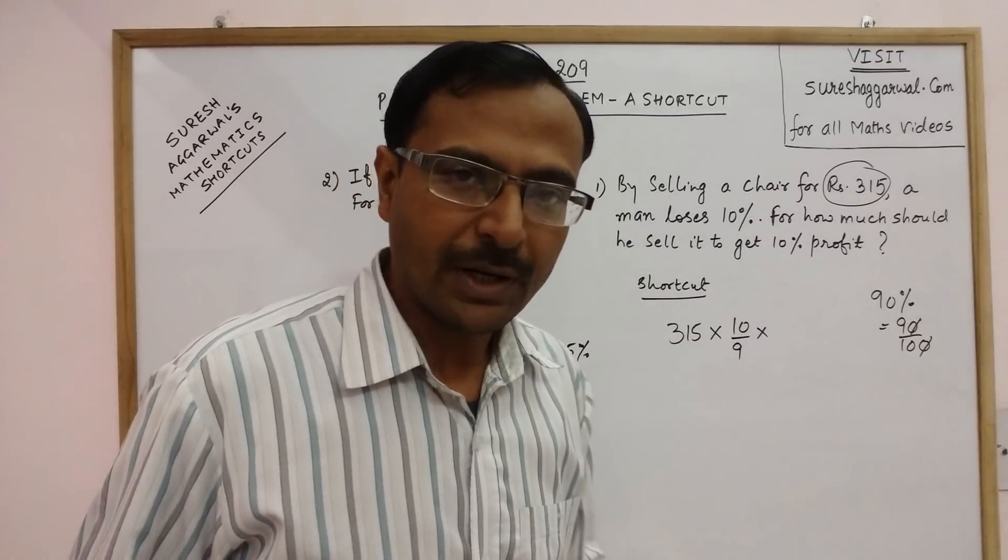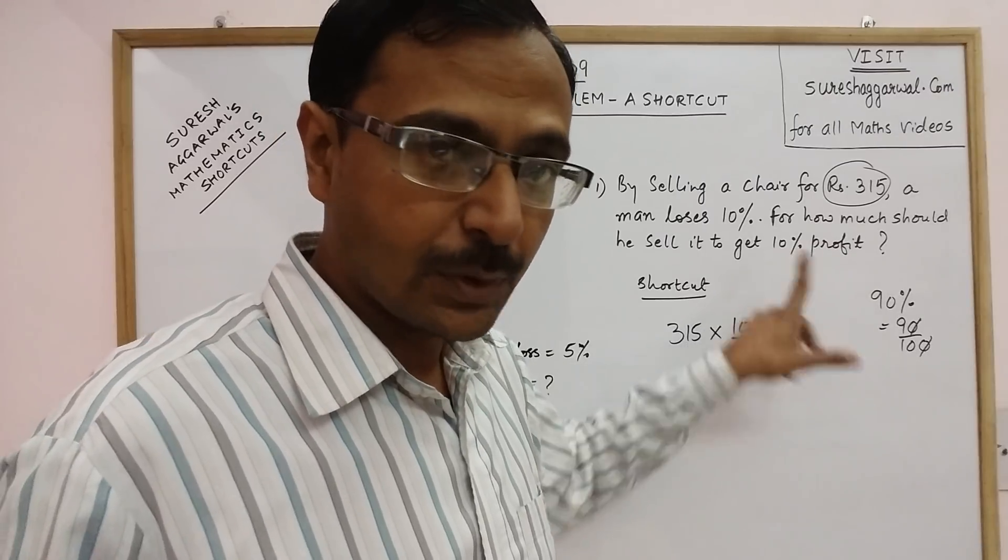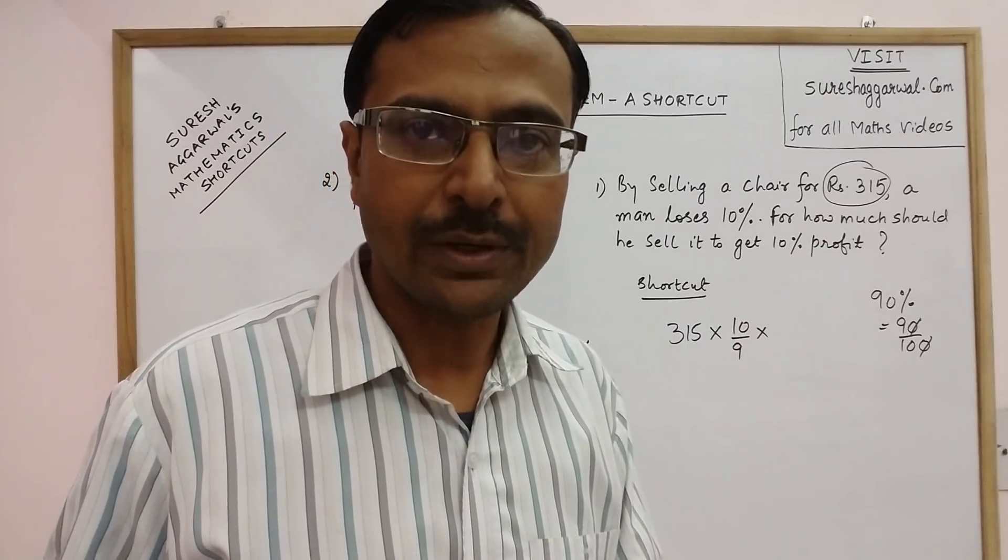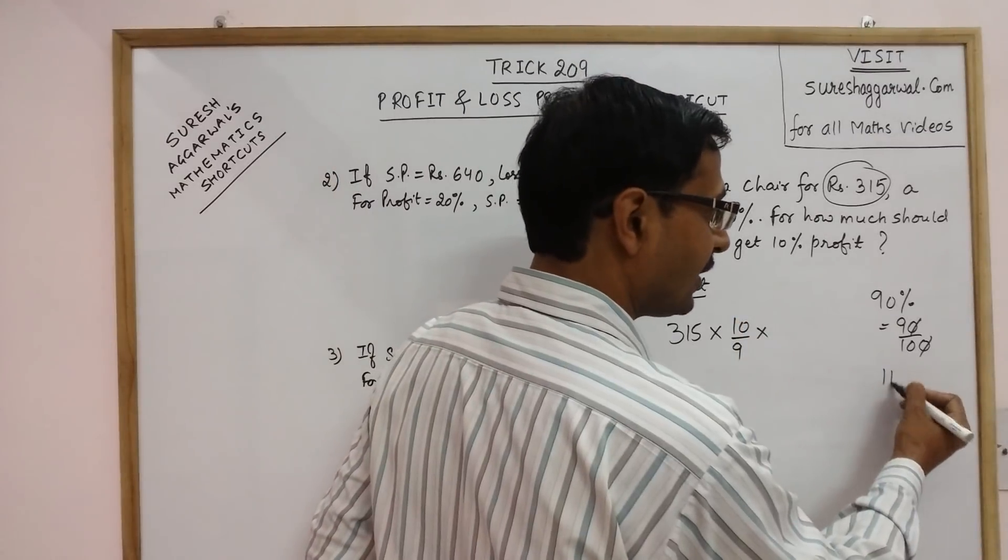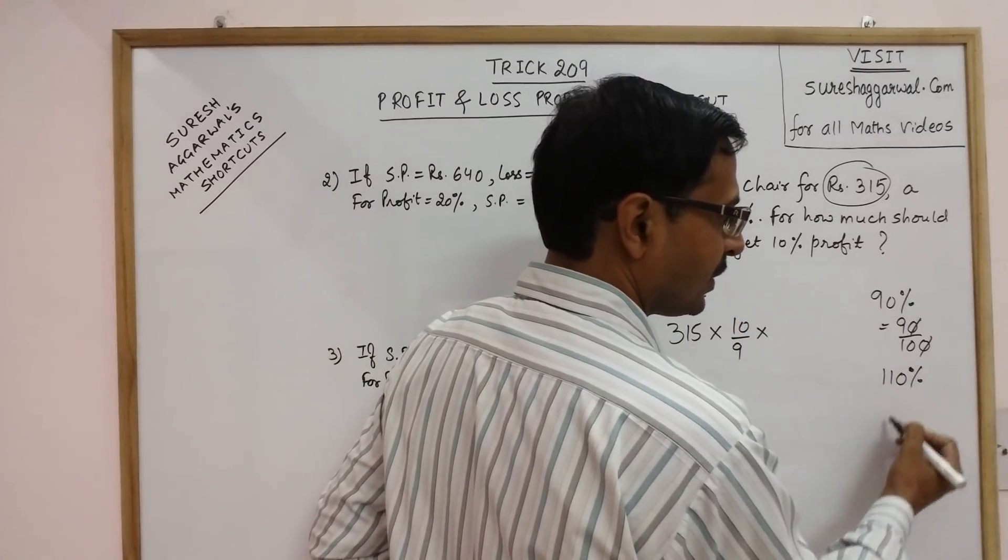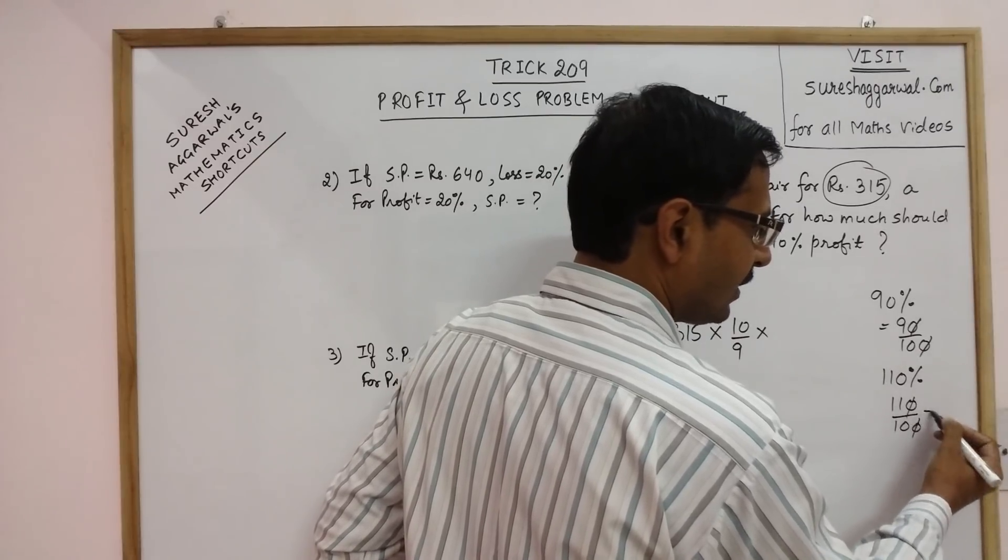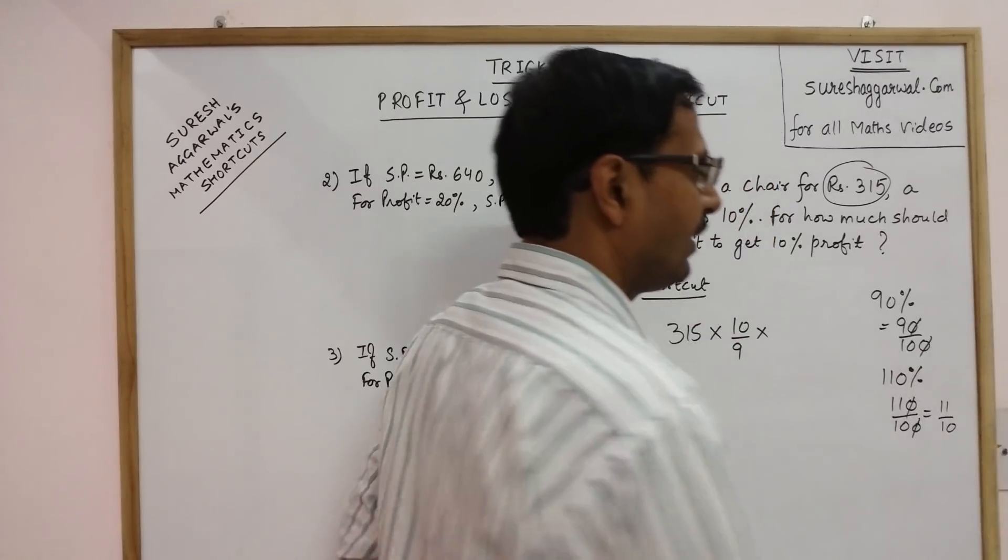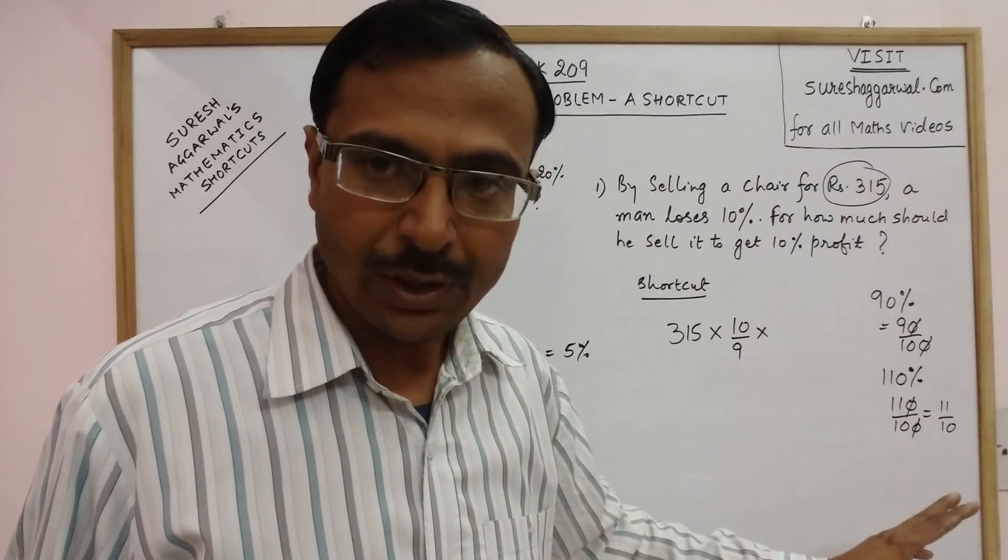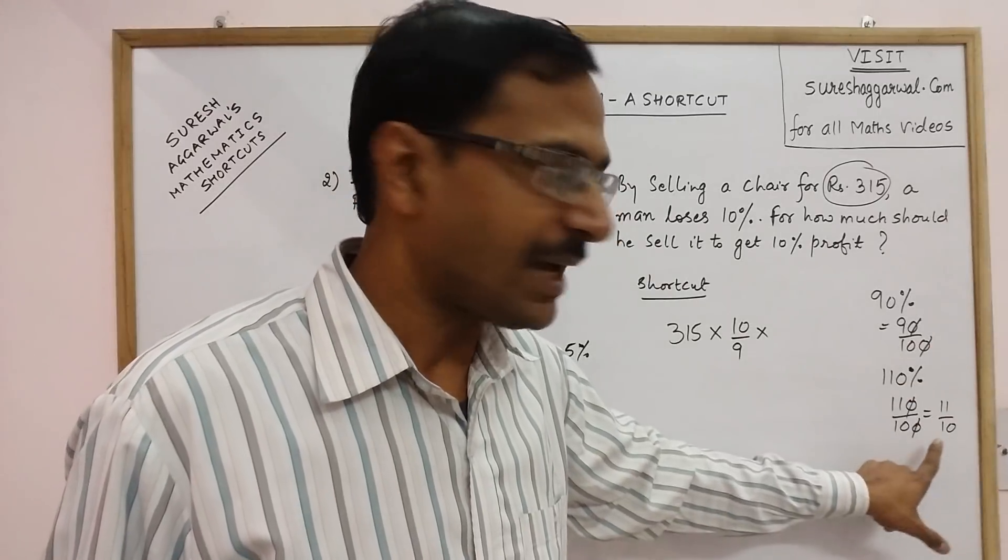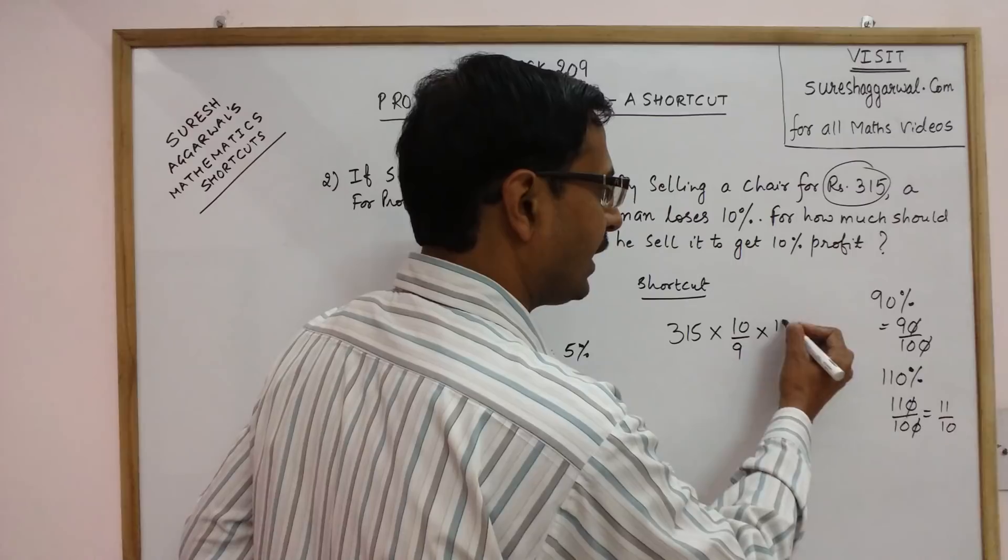Now the final part: we have profit of 10%, which is always added to 100. So 100 plus 10 gives 110%. Convert this into fraction to get 11 upon 10. In case of profit you do not need to take the reciprocal, just take the fraction as it is.